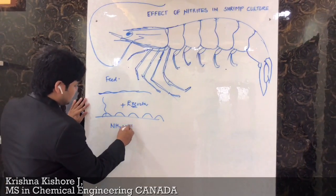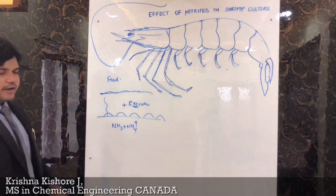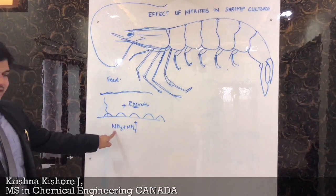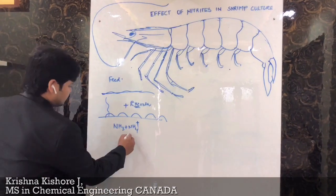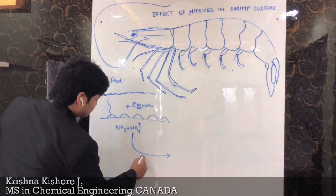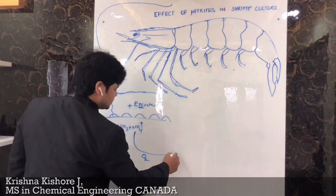In the nitrogenous cycle, in the nitrogen denitrification process, the first step is it gets oxidized and converts to nitrite.